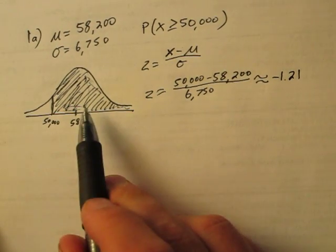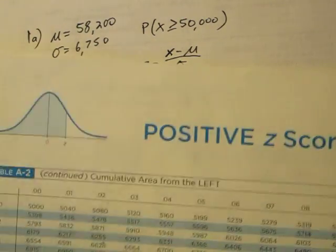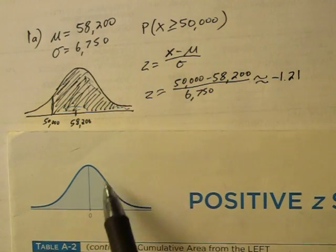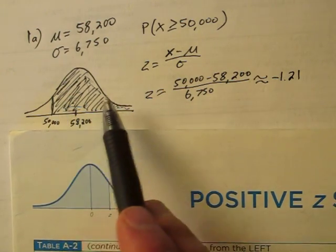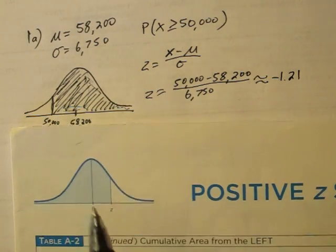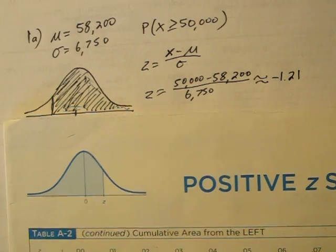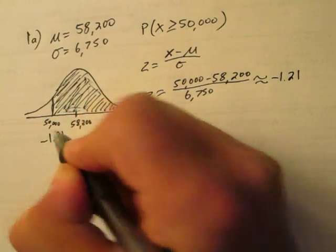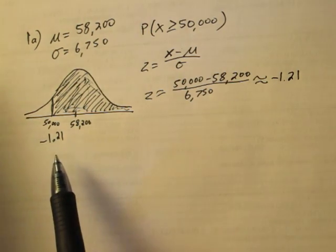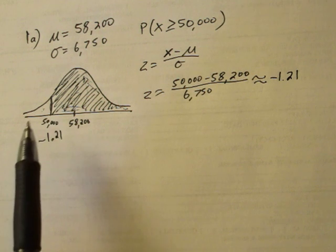Now we have to be careful using our chart here, because our chart is set up actually the opposite way. This is showing the area to the right of that line. Our chart is set up by showing the area to the left of the line. So when we look up this negative 1.21 on our chart, it's actually going to give us this area. But we can fix that by just subtracting from 1.